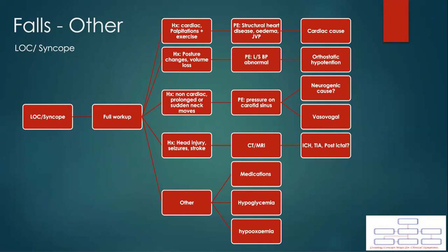If you are suspecting orthostatic hypotension, measure a lying and standing blood pressure, and make sure to ask if they experience symptoms associated with postural changes or volume changes. Similarly, it could be a vasovagal episode, especially if associated with sudden neck movements or after a prolonged standing episode.